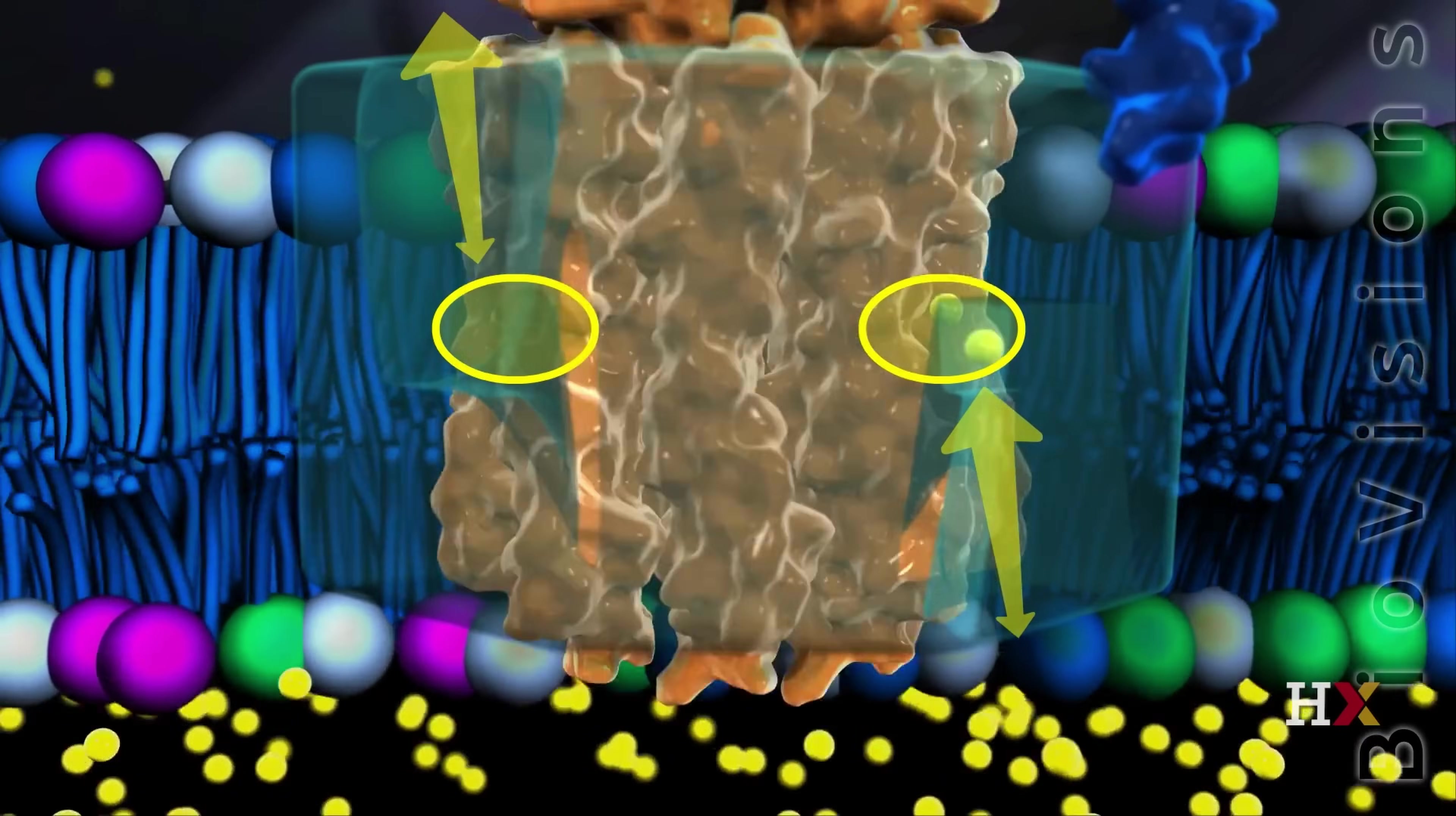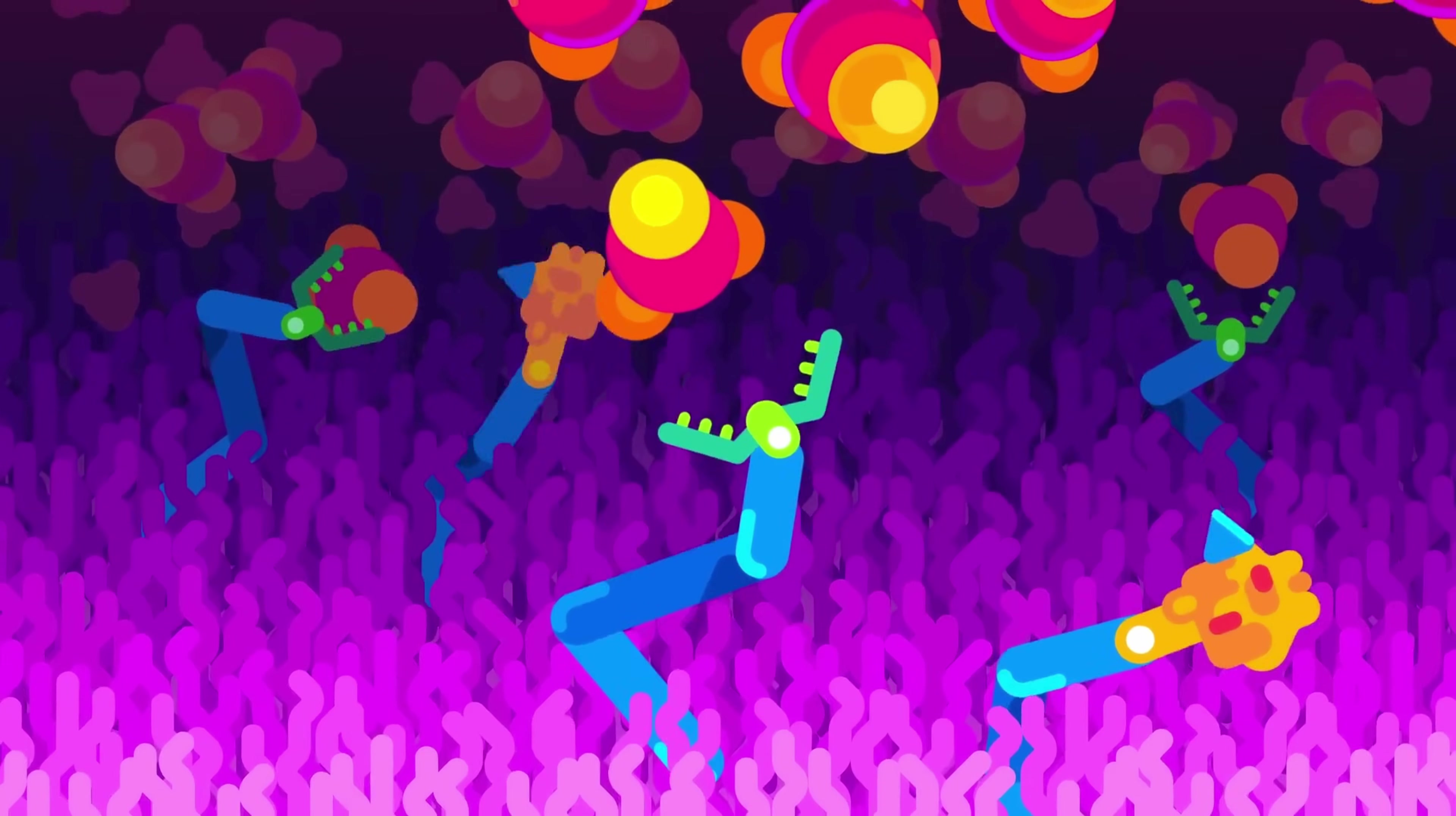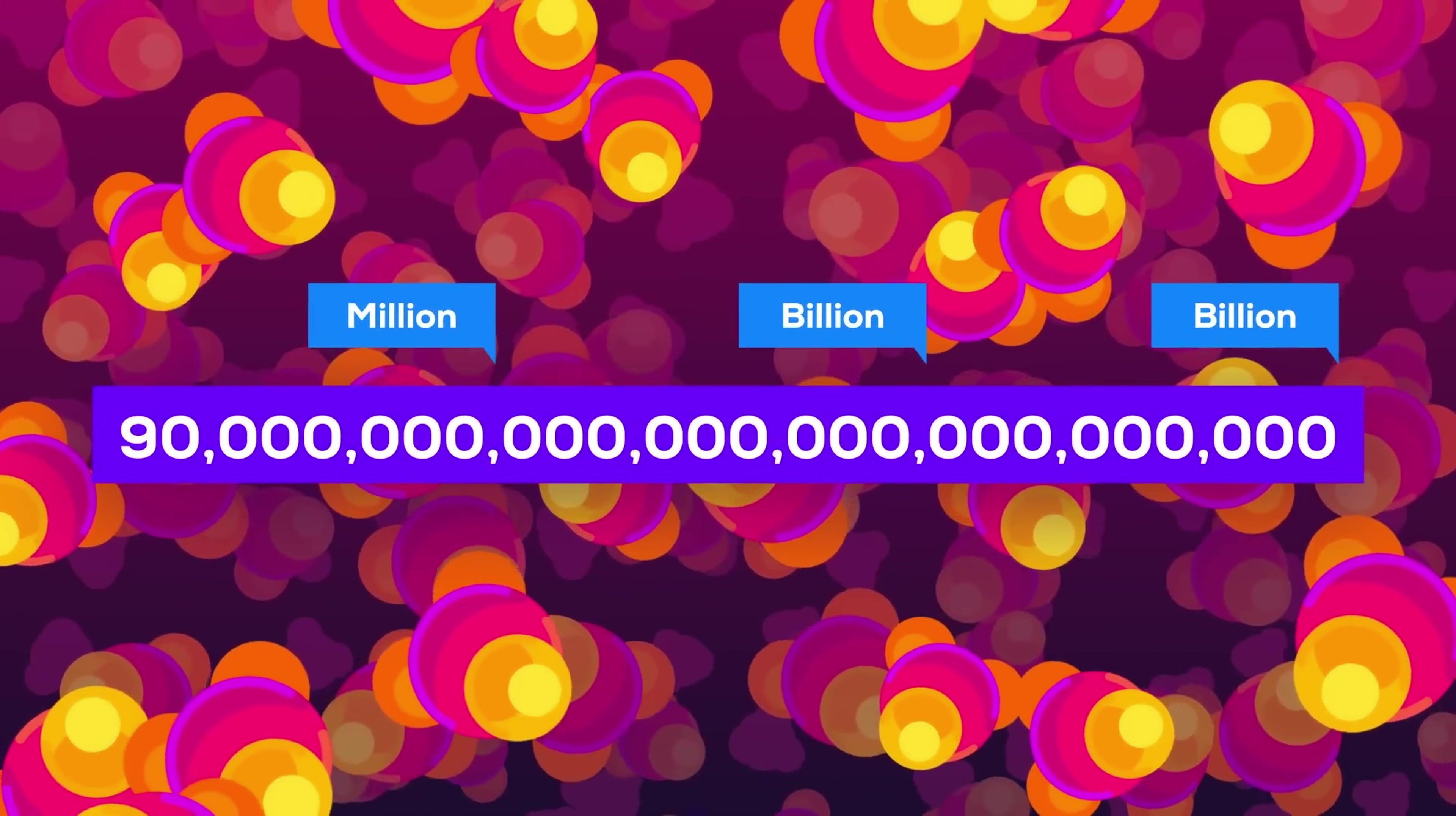This process, namely the production of ATP cells, is incredibly numerous. Your trillions of cells need a lot of ATP to keep you around. Every day, your body produces and converts about 90 million billion billion molecules of ATP.